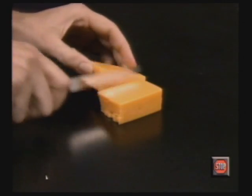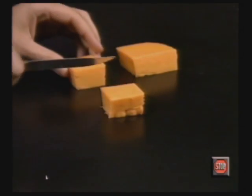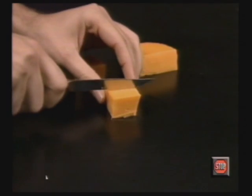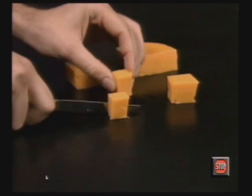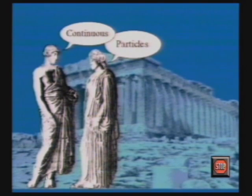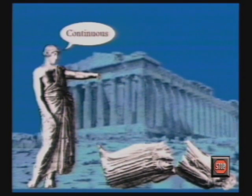If matter is continuous, any object can be divided in half, and then in half again indefinitely. No matter how many times you divide it in half, you will never reach the smallest part. The idea that matter is continuous is more like the world we experience, so the idea of the atom was largely forgotten for centuries.